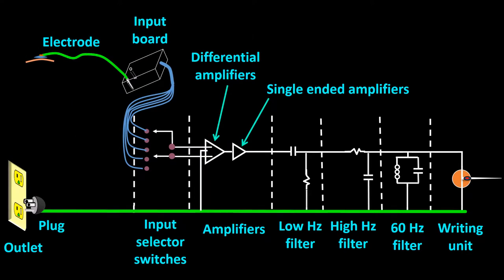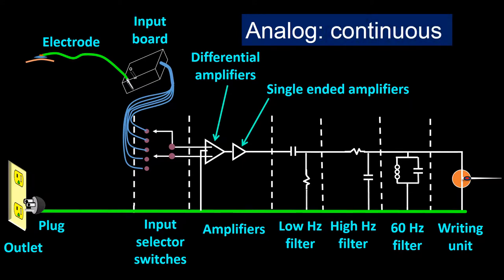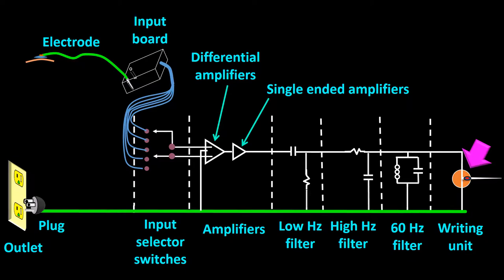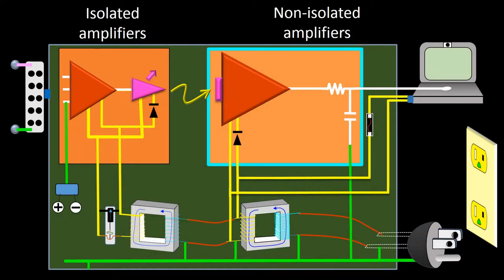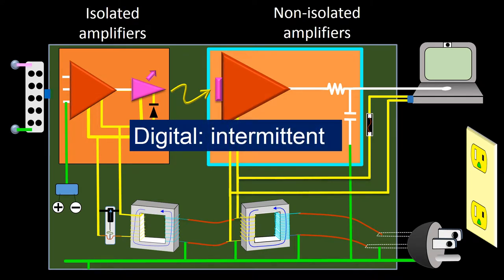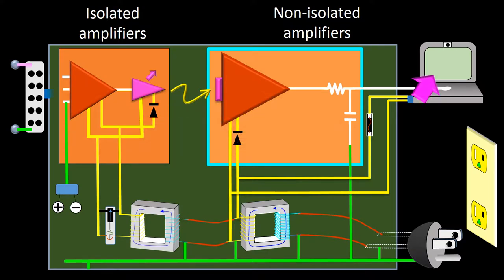This is the model of an old EEG machine. They were analog machines with continuous data recording translated to paper by an oscillographic pen writer device. This is the model of a new EEG machine. The new EEG machines are digital. They collect data points intermittently from the analog signal generated by the brain electrical activity and reproduce it by reconstructing the activity in the form of a continuous wave on the computer screen.